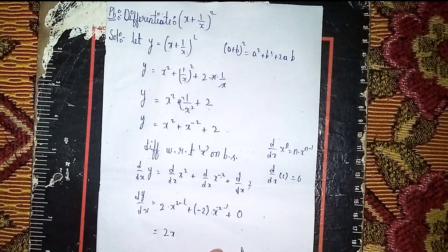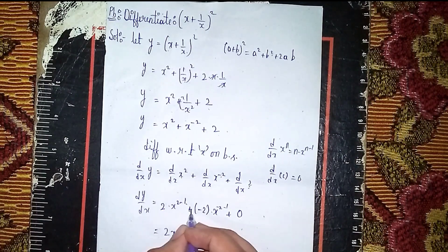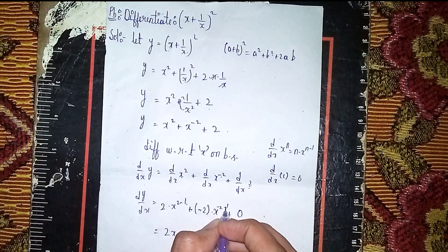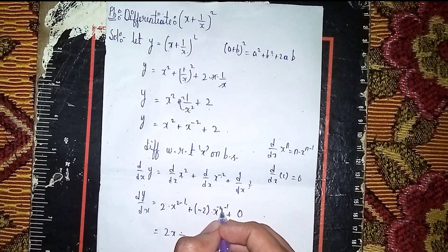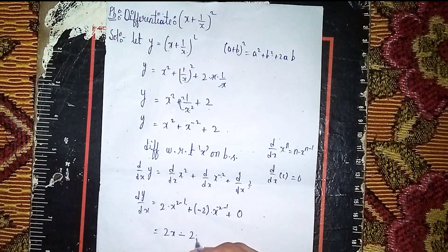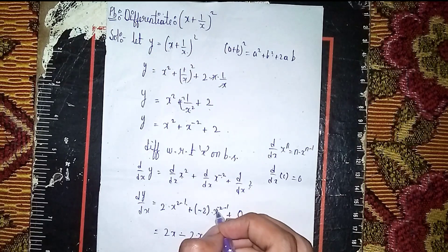Then plus, now plus times minus is minus. Now minus times minus will become plus. Minus 1 here comes, so -2 times x^(-3).